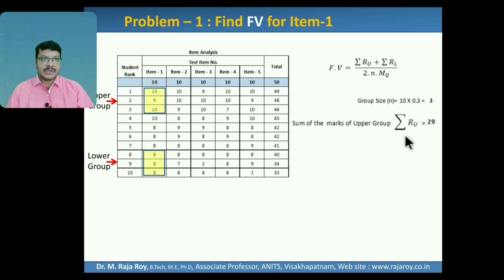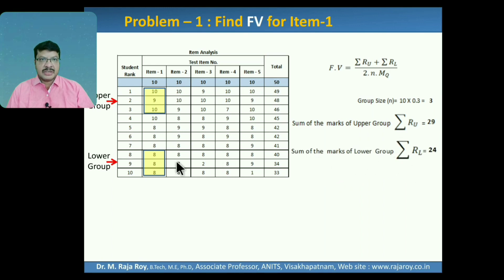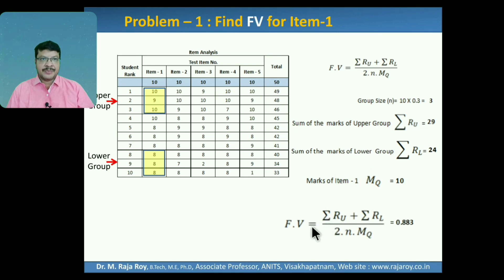Sum of the marks in the upper group students, Sigma RU, is equal to the sum of those 3, which is 29. Sum of the marks of the lower group students, Sigma RL, is equal to 24. Marks allocated to this particular question is 10, so MQ equals 10. Facilitation value FV equals Sigma RU (29) plus Sigma RL (24) divided by 2N (N=3) into MQ (10). That gives us the facilitation value.